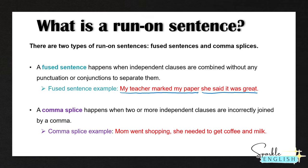The other type of run-on sentence is a comma splice. A comma splice happens when two or more independent clauses are incorrectly joined by a comma. For example: mom went shopping, she needed to get coffee and milk. Many people will add a comma here instead of a period, and this is a mistake. Now I'm going to show you four different ways we can fix run-on sentences.